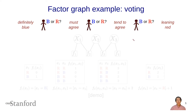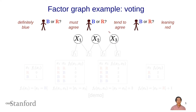We can model this problem using a factor graph. We're going to define a set of variables: x1 for person one, x2 for person two, x3 for person three. And we're going to define a set of factors that capture each of these four constraints or preferences.